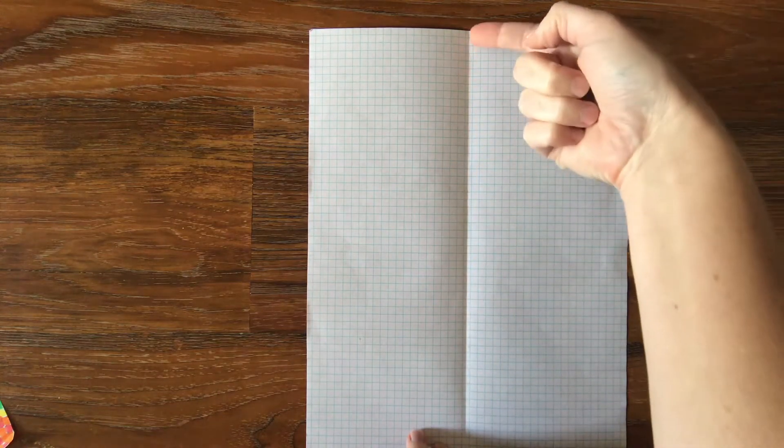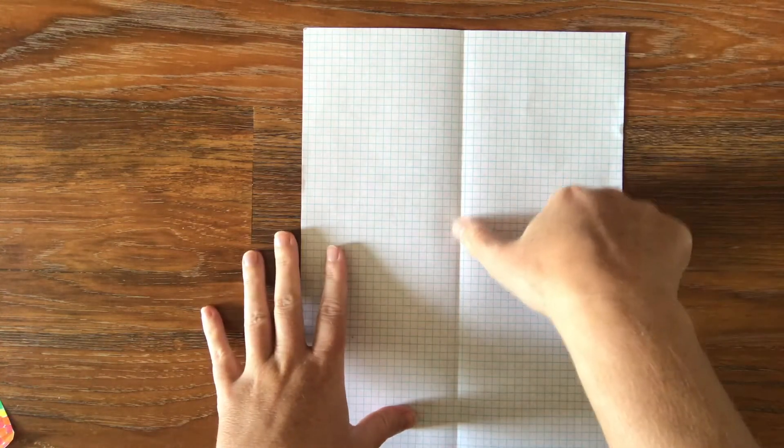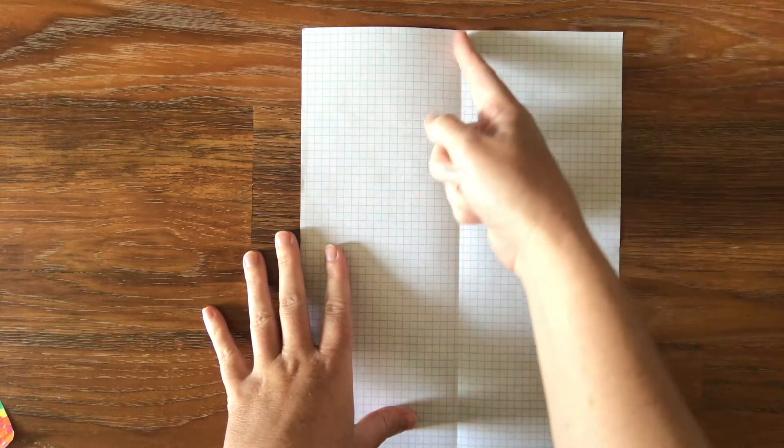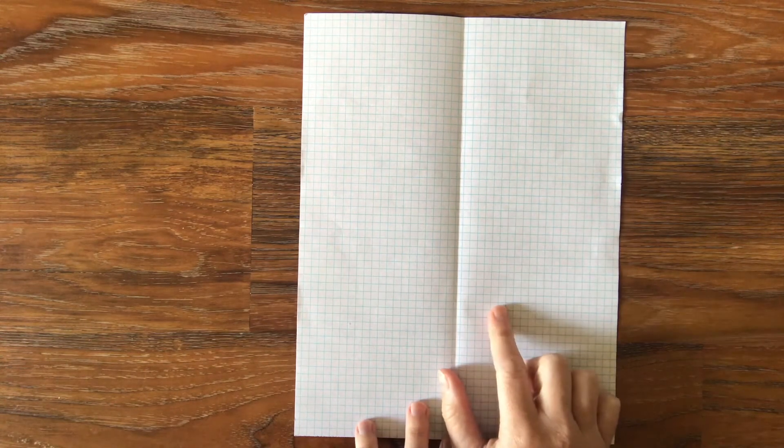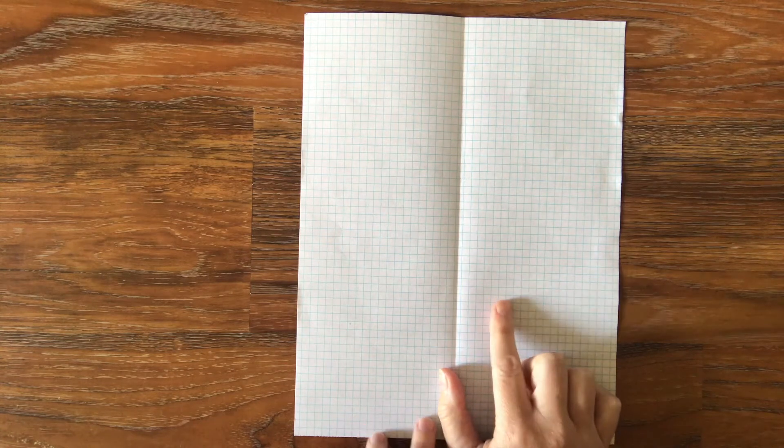And now that fold is marking the line of boxes that are the middle. So that's going to be my line of symmetry. Okay, so now I can go in and I can start coloring in my boxes. If you want to plan this out first and draw with a pencil, you can. I think I'm just going to go for it.